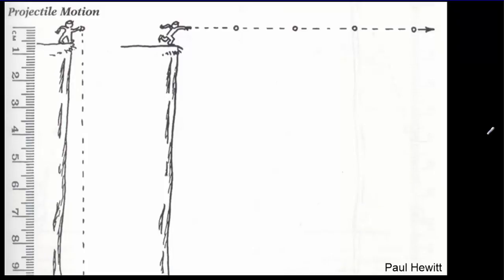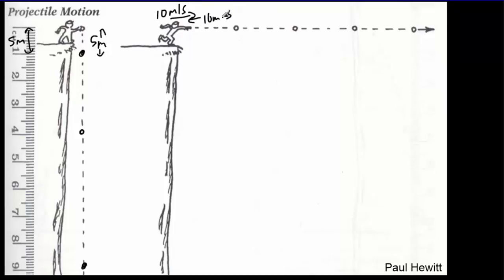So hopefully you remember those numbers for dropping a ball straight down: 5, 20, 45, 80. Now let's pretend there was no gravity and we just threw the ball at 10 meters per second horizontally. Then it's always going to go at the same speed, moving across by 10 meters in each second. I'll call that the no gravity line — that's the horizontal motion independent of the vertical motion.